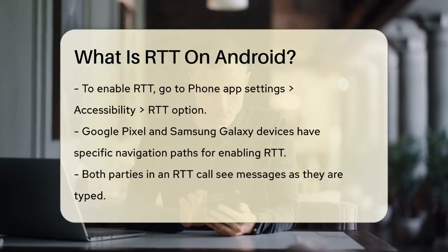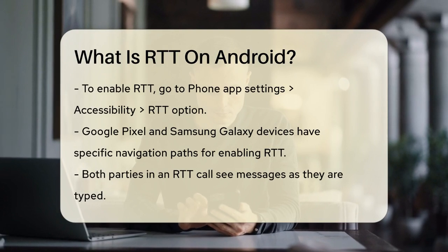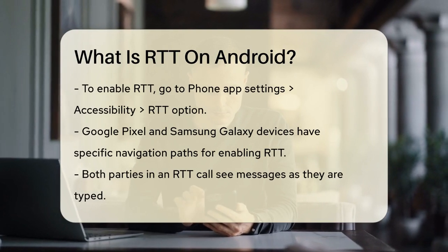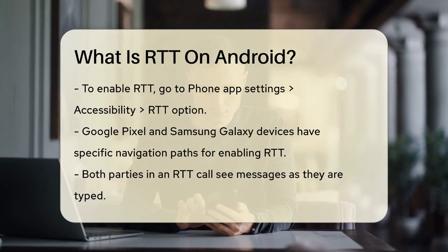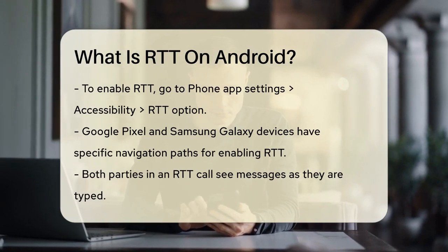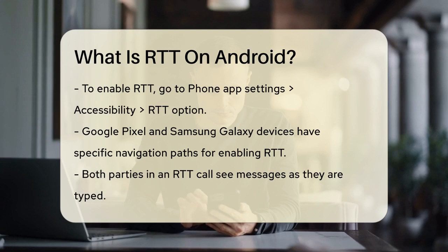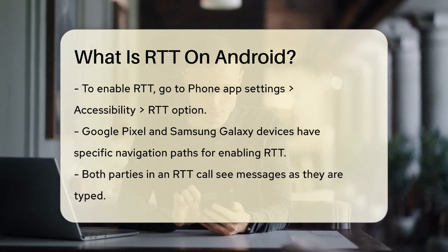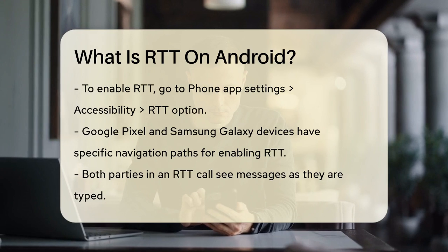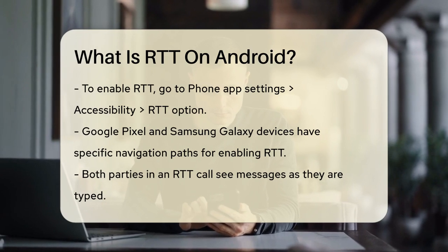To enable RTT, you typically go to your phone app settings, navigate to Accessibility, and select the RTT option. For example, on Google Pixel phones, you go to Settings > Accessibility > RTT, and on Samsung Galaxy smartphones, you go to Settings > Accessibility > Hearing Enhancements > Real-Time Text.